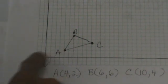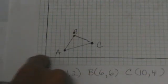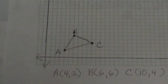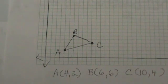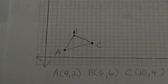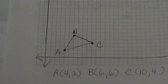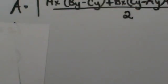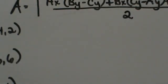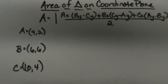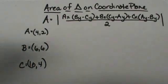This one is 4, 2, 6, 6, and 10, 4. I've identified my triangle and my vertices. Now I'm going to go back to this formula and show you how to plug into it because it is a little confusing. Let me zoom back out for you so you can see this formula. Here's our formula.